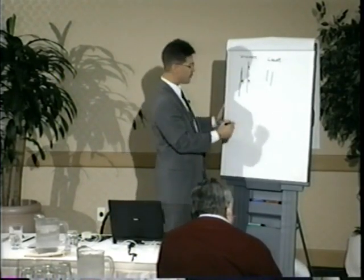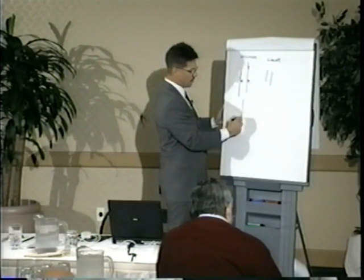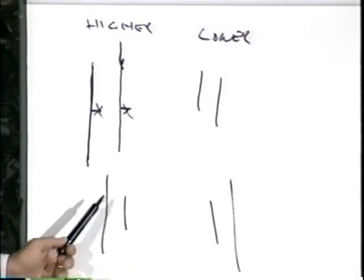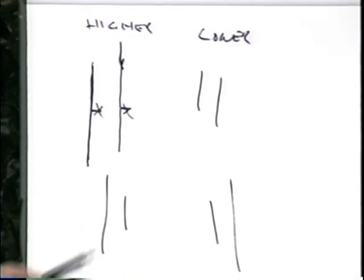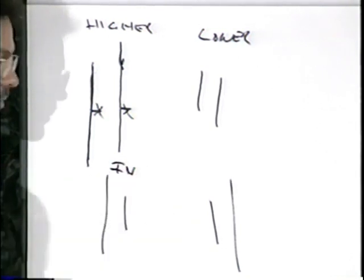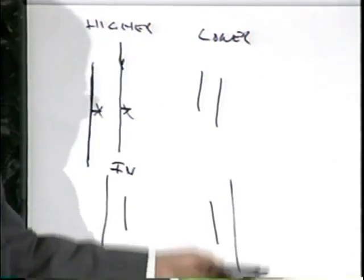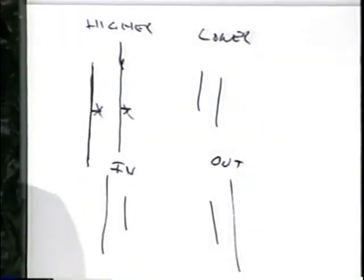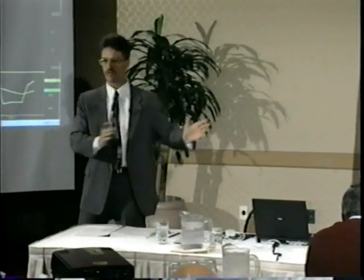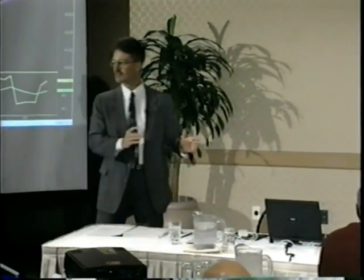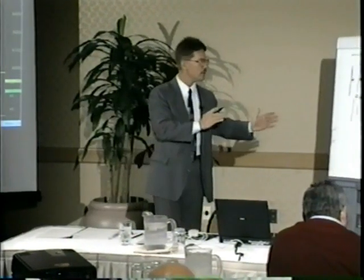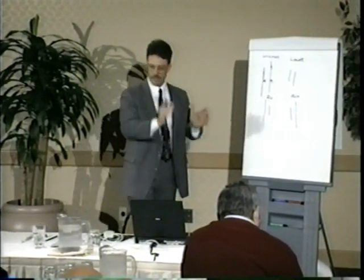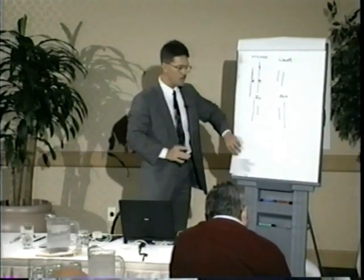The other two possibilities: we can have a day that makes neither a higher high nor a lower low — this is an inside day. Or we can have a day that makes both a higher high and a lower low — that's an outside day. Would you agree those are the only four possibilities? There's no other way the market can trade compared to the previous price bar. It has to do one of these four. So I've got a constant — I can compare this in a certain fashion.